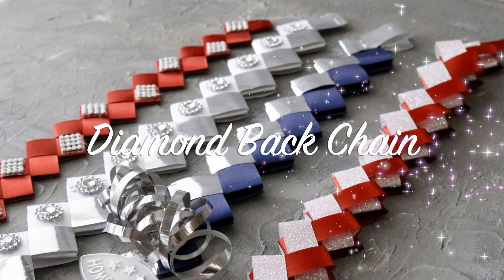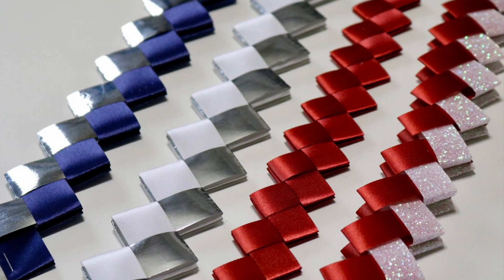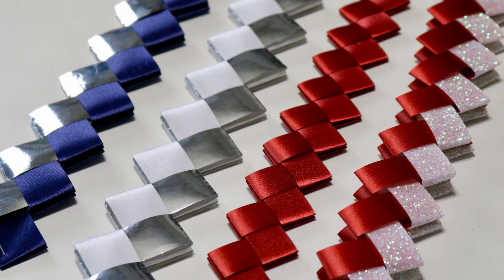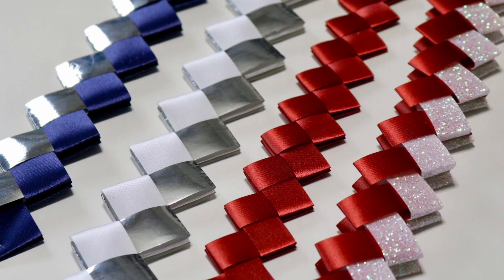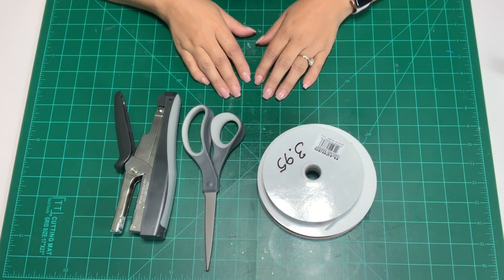We'll start with a diamond back chain. You can make these using different size ribbons. The instructions will be the same for all, but the width of the ribbon will determine how long you will need to cut your strips and we'll discuss that.